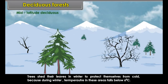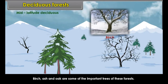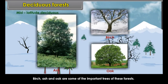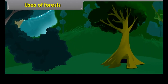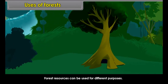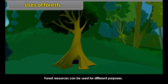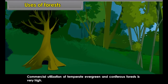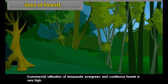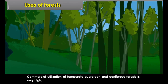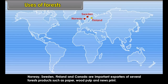Mid-latitude deciduous forests occur in the coastal temperate regions. Western Europe, northeastern China, Japan, northeastern USA, New Zealand and southern Chile have such forests. Trees shed their leaves in winter to protect themselves from cold, because during winter the temperature in these areas falls below 6 degrees Celsius. Birch, ash and oak are some of the important trees of these forests.